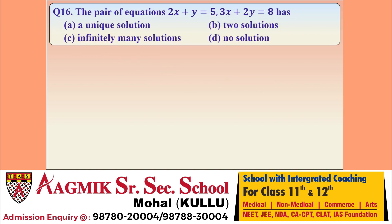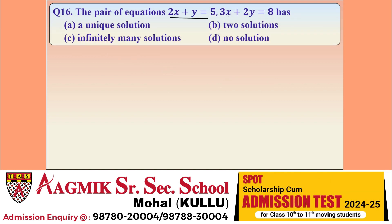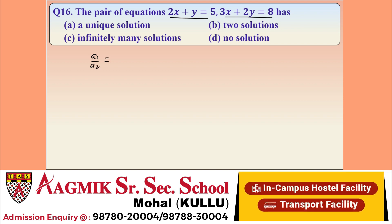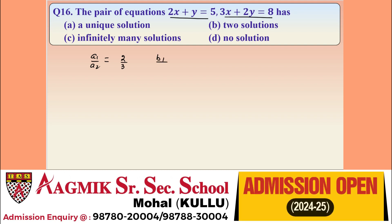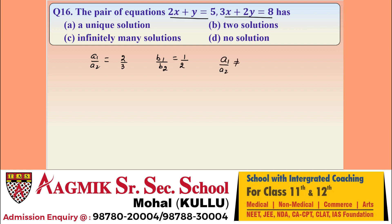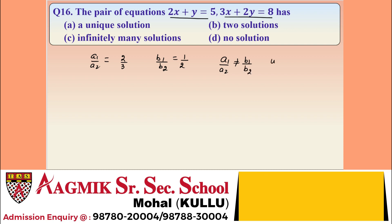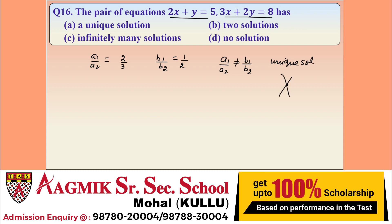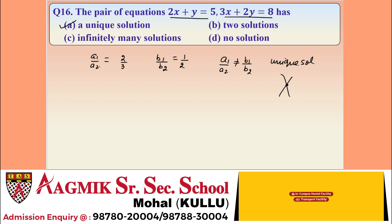Question 16: determine the type of solution for the given pair of linear equations. We calculate the ratios: A1/A2 = 2/3 and B1/B2 = 1/2. Since A1/A2 ≠ B1/B2, this is the condition for a unique solution, meaning the lines are intersecting at a unique point. Option A is correct.